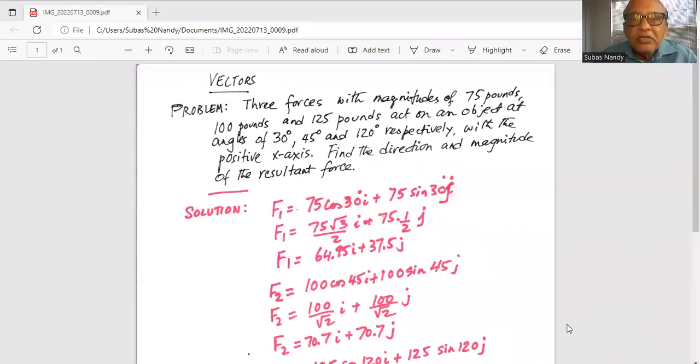Three forces with magnitudes of 75 pounds, 100 pounds and 125 pounds act on an object at angles of 30 degree, 45 degree, and 120 degree respectively with the positive x-axis. Find the direction and magnitude of the resultant force.